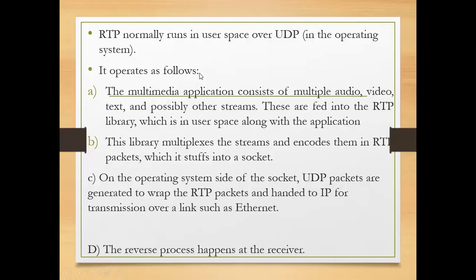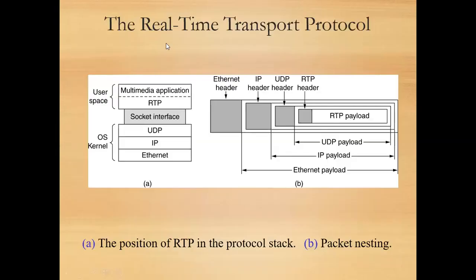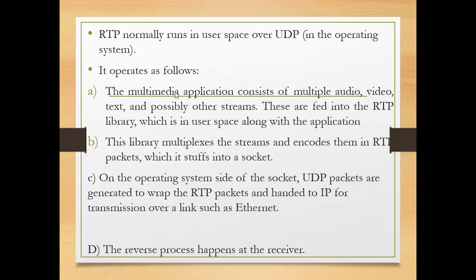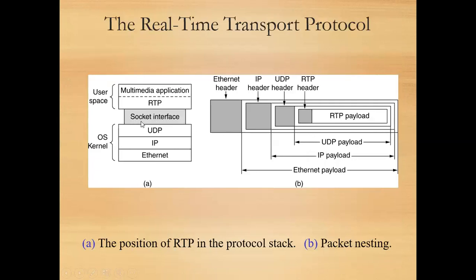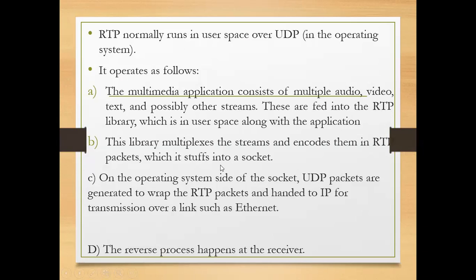It operates as follows. First step: the multimedia application consists of multiple audio, video, text, and possibly other streams. These are fed into the RTP library which is in user space along with the application. Second step: this library multiplexes the streams and encodes them into RTP packets, which are stuffed into a socket.